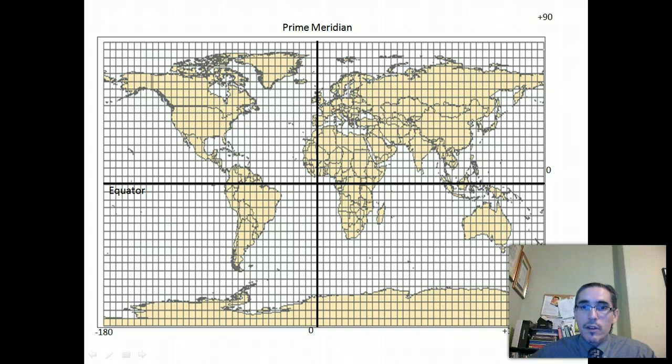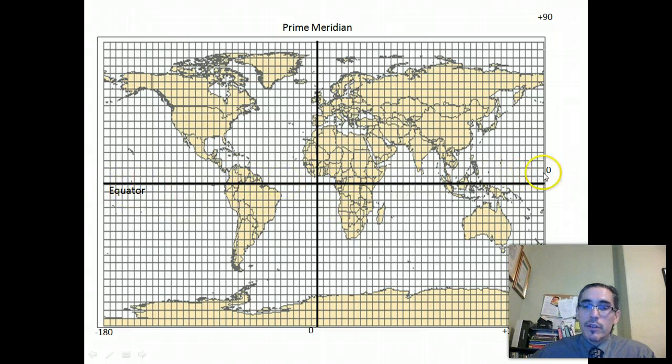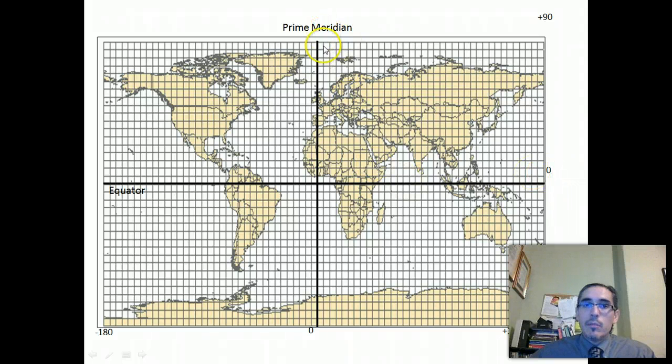So for the Earth, the two axes of interest that define the origin and that we use as a reference point are the equator, which runs right down the middle of the Earth like this, and then the prime meridian, which runs through Greenwich, England, through West Africa, and then cutting through the South Atlantic. So these two lines are going to be the basis upon which we describe locations all across the Earth.